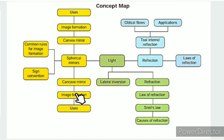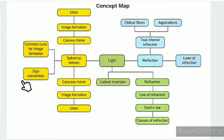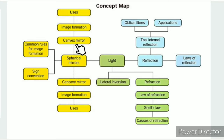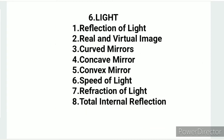Common rules, sign convention — Cartesian sign convention with positive and negative values — convex mirror image formation, speed of light, and a total of 8 topics are covered in this video.